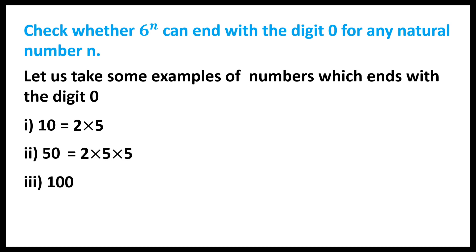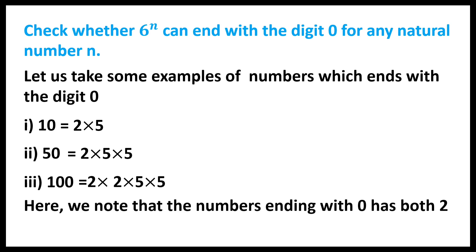The next example is 100, which equals 2 × 2 × 5 × 5. Here we can observe that numbers ending with 0 have both 2 and 5 in their prime factors.